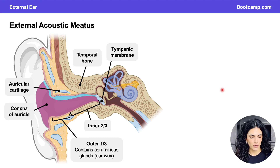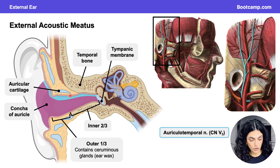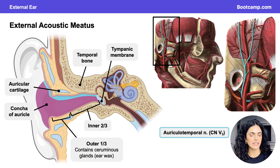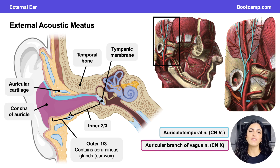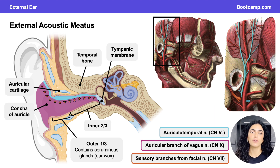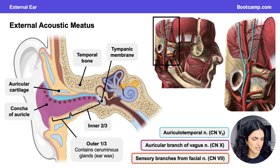The innervation of the external acoustic meatus is fairly similar to the auricle. Along the more superior aspects, shown in blue, innervation is provided by the auriculotemporal nerve, which ascends along the temples and sends small branches into the meatus. The majority of the meatus innervation, shown in pink, is done by the auricular branch of the vagus nerve — a very small branch visible along the posterior aspects of the meatus. There is also some innervation from the facial nerve as it travels through the facial canal.